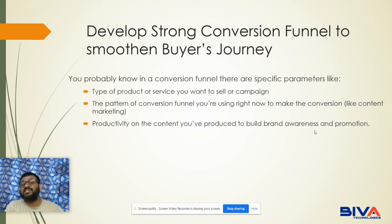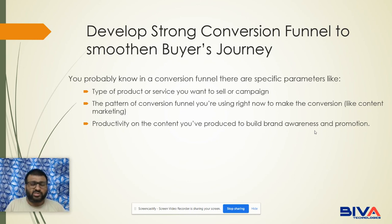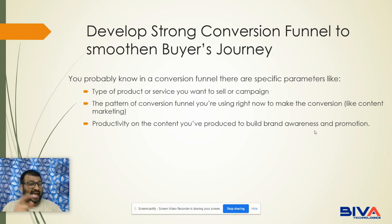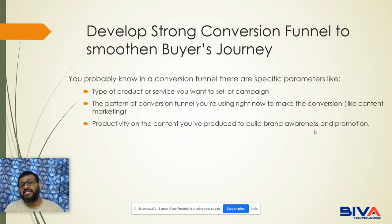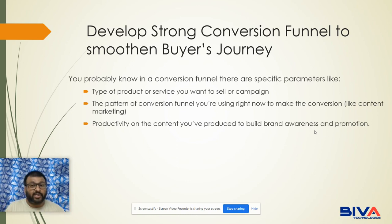Number two: the pattern of conversion-friendly channels you are using. Suppose you are focusing on content marketing or email marketing — you will have to trigger keywords according to that channel; you cannot generalize the approach. Number three: the productivity from the content you have produced to build brand awareness and promotion. Brand awareness and promotion is based on your brand value, so you will have to build brand value and focus on conversion through brand awareness with the right keyword mapping.